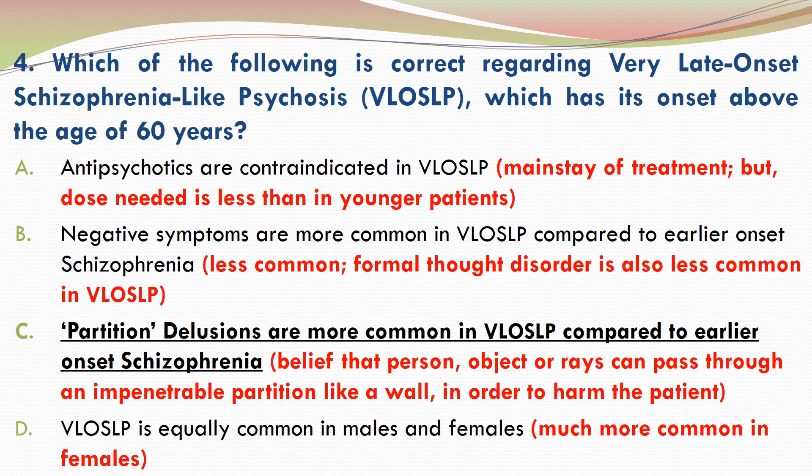A is incorrect because antipsychotics are the mainstay of treatment of VLOSLP, but the dose needed is usually significantly less than the dose that is used to treat younger patients.